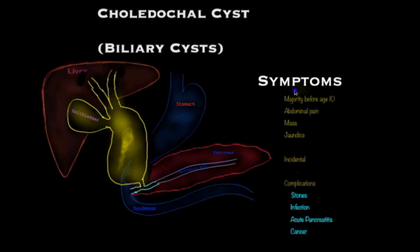Now let's look at the symptoms. The bile tube has turned into a sac and bile just sits there without going anywhere, giving rise to stasis which may lead to problems. The majority of patients will present before the age of 10 with a triad of symptoms: abdominal pain, mass, and jaundice. Others will present incidentally where the cysts are found when a scan was performed for something else, and yet another cohort will present with complications.